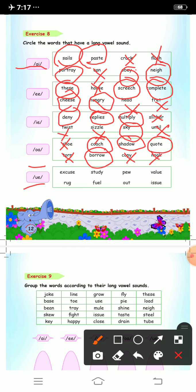Next is u sound. First one is excuse, yes we will circle it. Study, no. Pew, yes. Value, yes. Rug, no. Fuel, yes. Out, no. Issue, yes. So we have circled the long U sound.